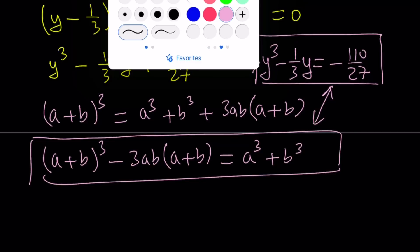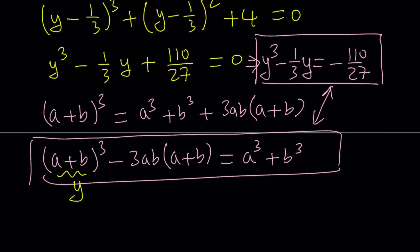It makes sense to replace y with a plus b. I'm going to replace a plus b with y. By comparing these equations, we notice that this has to be 1 third in order for this to work, and this needs to be negative 110 over 27. That's the heart of Cardano. After making these replacements, you get a system of equations which becomes quadratic.